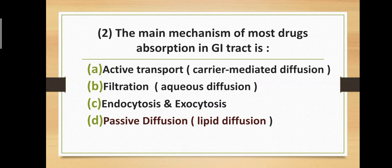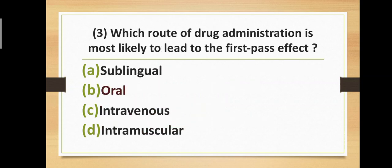Question number two: The main mechanism of most drugs' absorption in the GI tract is — Option A: active transport (carrier-mediated diffusion). Option B: filtration (aqueous diffusion). Option C: endocytosis and exocytosis. Option D: passive diffusion (lipid diffusion). The correct answer is option D — passive diffusion. The main mechanism of most drugs' absorption in the GI tract is passive diffusion.